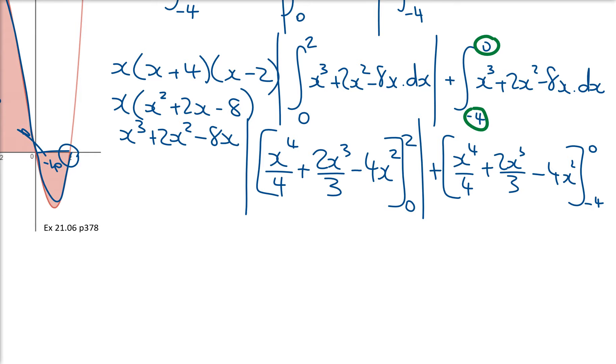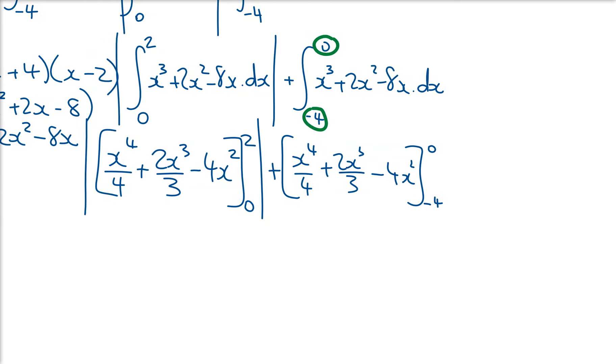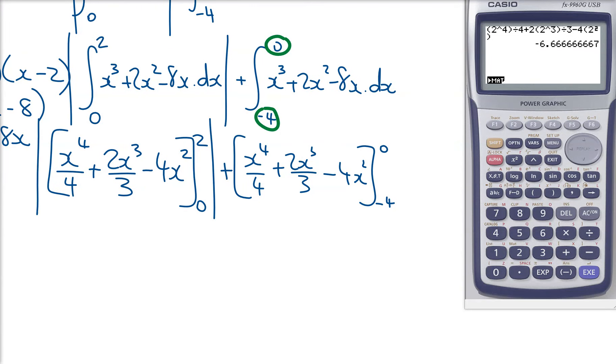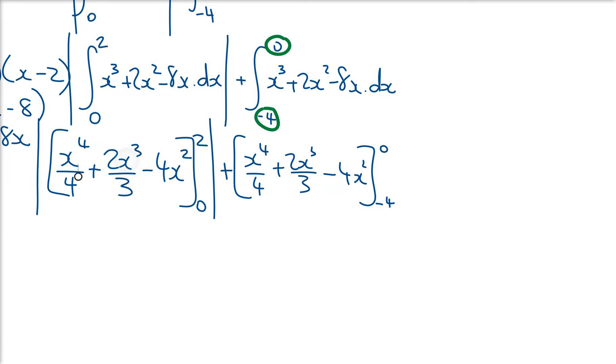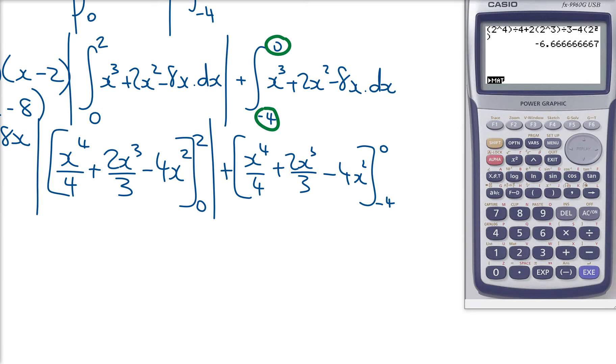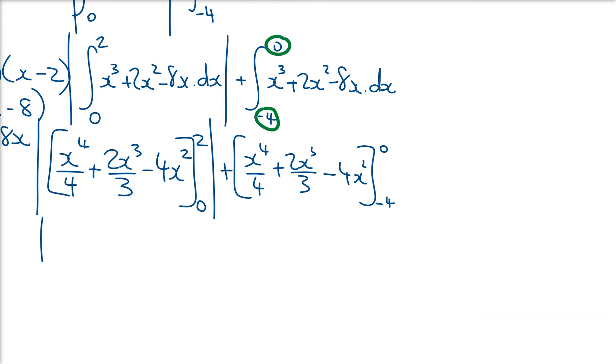So I'll just move this over and get my calculator out. Substituting in 2 into this equation for my x's gives me an answer of negative 6 and 2/3. When I put zero into that, I'm going to get zero, aren't I? So this is going to be the absolute value of negative 6 and 2/3 minus zero, which is going to be 6 and 2/3.